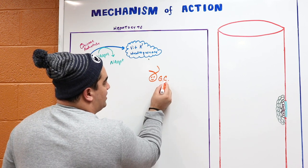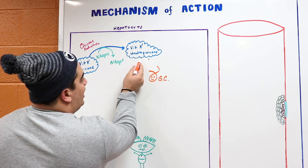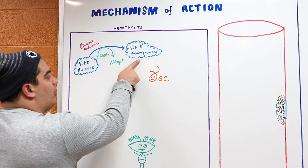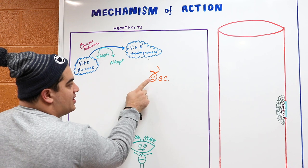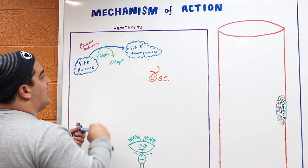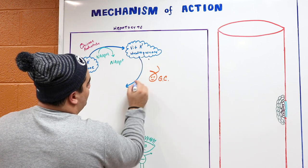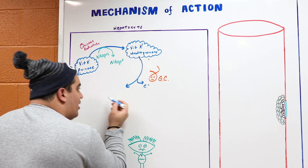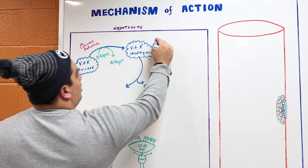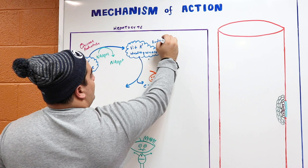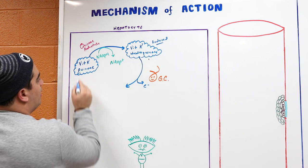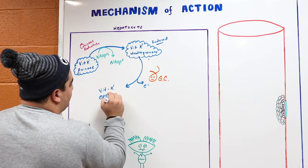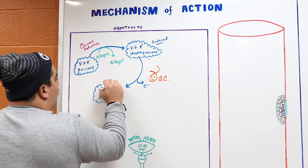Vitamin K hydroquinone reacts in another step with another really important enzyme called gamma glutamyl carboxylase. Vitamin K hydroquinone actually drops off its electrons onto this gamma glutamyl carboxylase. When it does that, it drops off those electrons, and then gets converted into another oxidized form. Hydroquinone is the reduced form of Vitamin K. Vitamin K quinone and Vitamin K epoxide are the other oxidized forms.